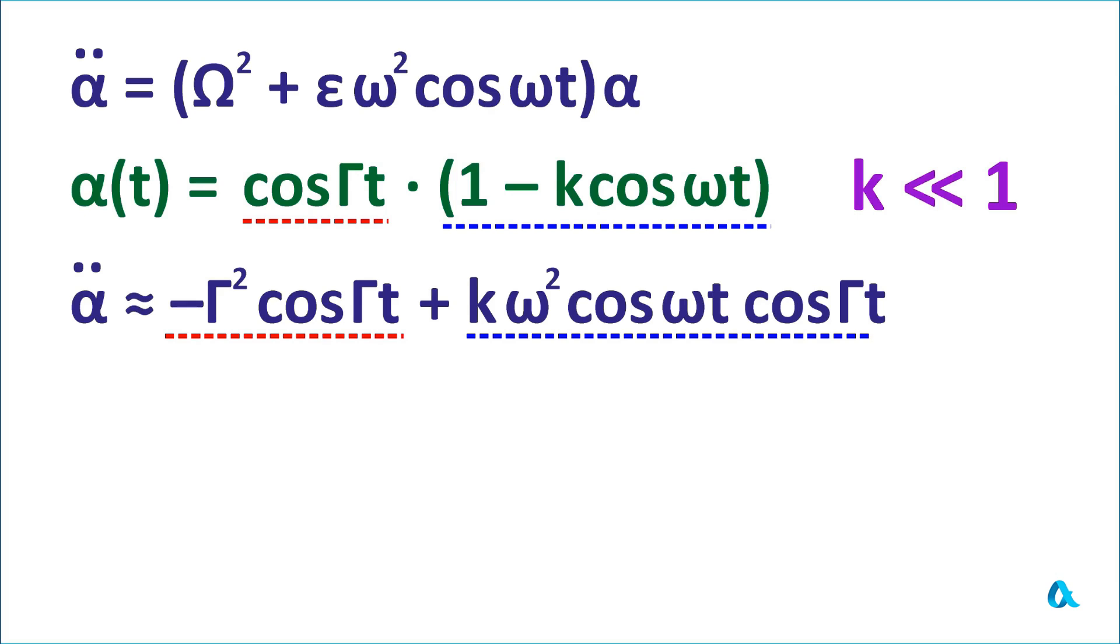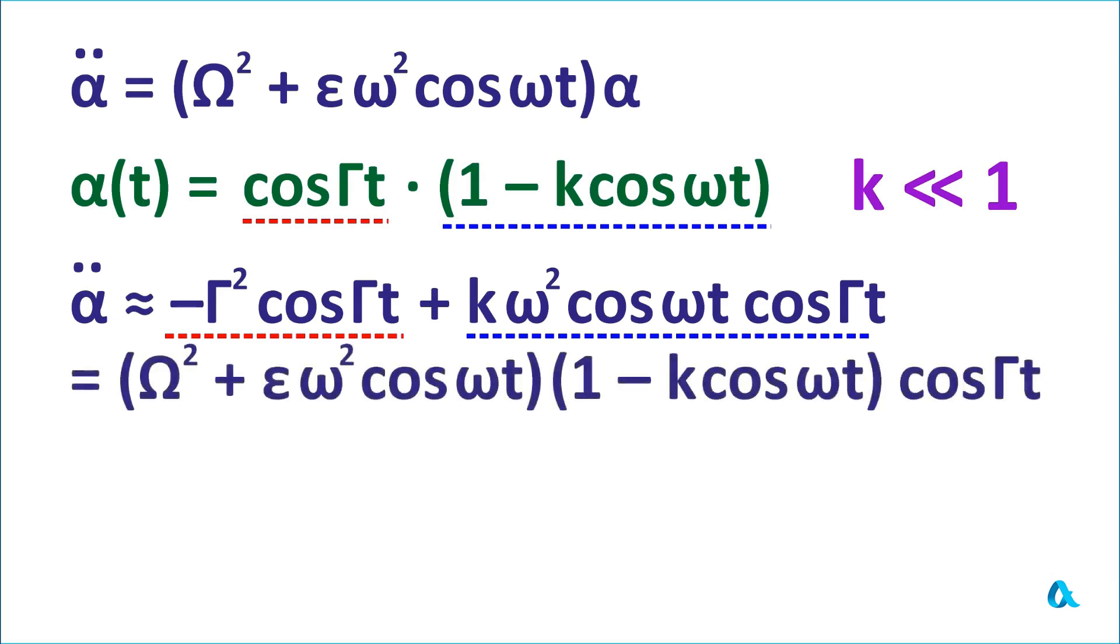And on the other, we will get α double dot if we substitute α from the second line into the equation written in the first line. And we will get such a product of two brackets, and also cosine γt. Well, it is clear that cosine γt cancels out completely here because it is present in all terms. And now the most important thing: we need to highlight the fast terms on one side and the slow ones on the other. In the product of two brackets, the fast ones are where cosine ωt is.